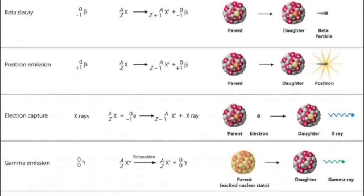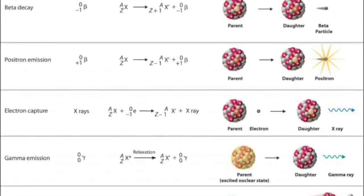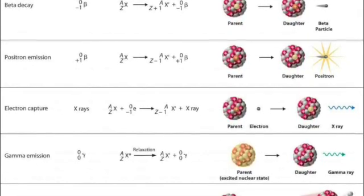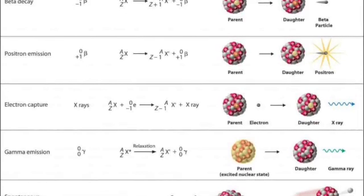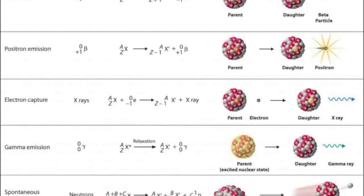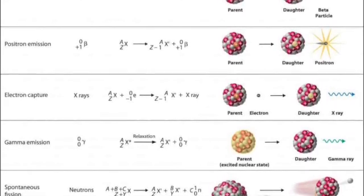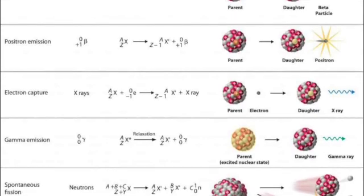but just in passing, gamma emissions are a result of an excited nucleus that goes back to the ground state by emitting a highly energetic electromagnetic radiation.